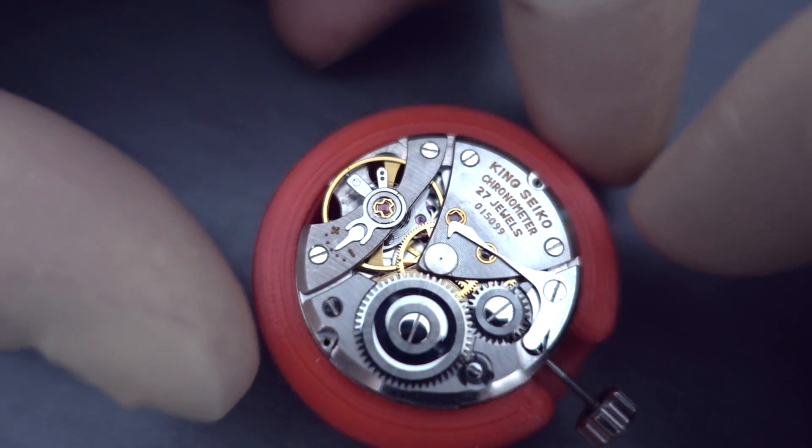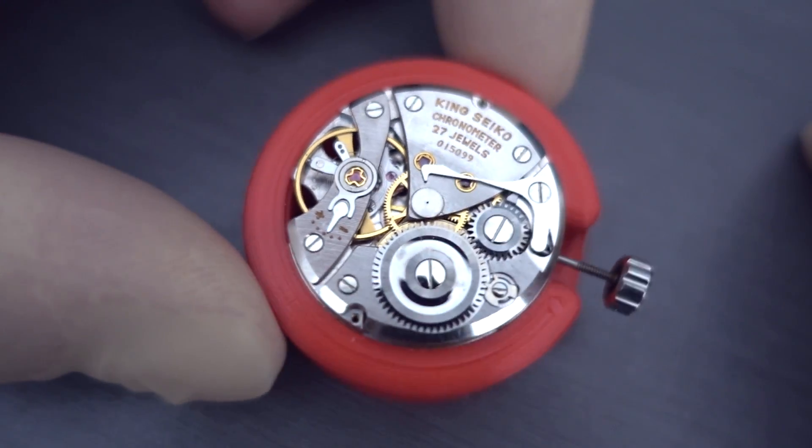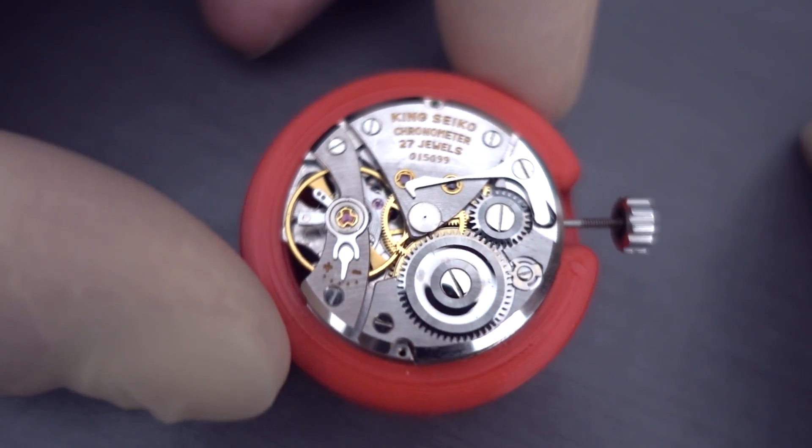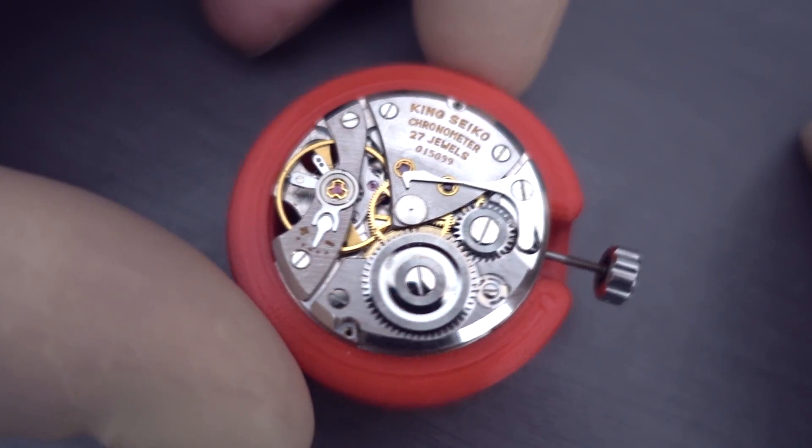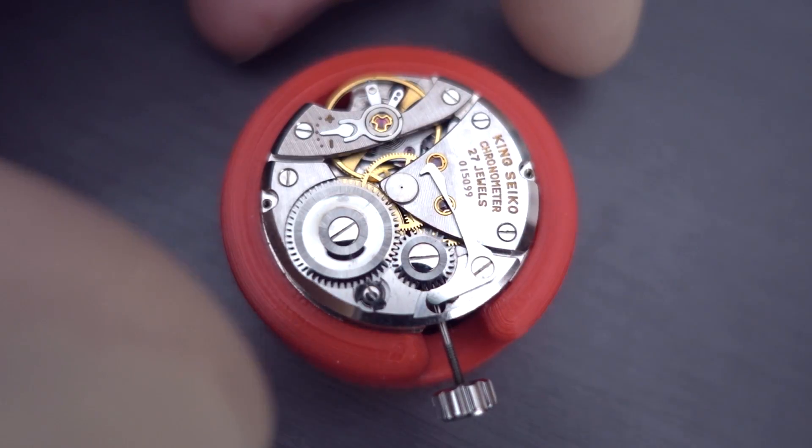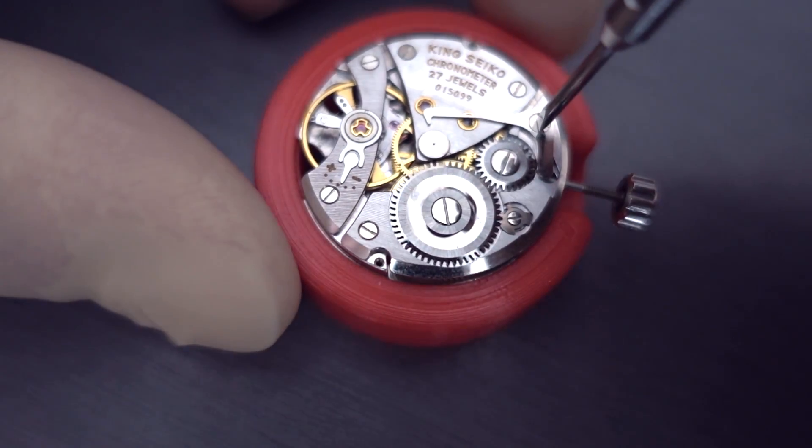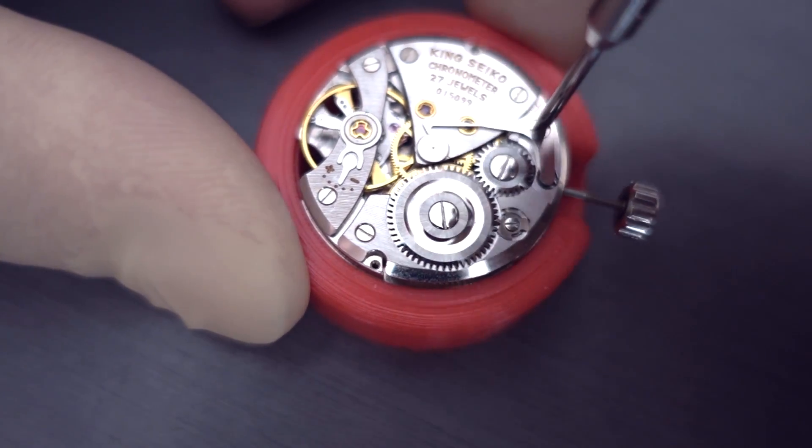These are actually a really nicely finished movement. So you'll see some high polished surfaces there. And you'll see that it's actually very similar to the 4402. But the main difference is that you can see there the large hacking lever which kind of looks like a hockey stick or something like that.